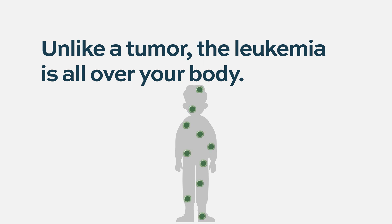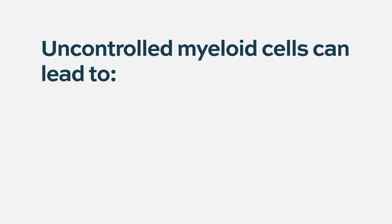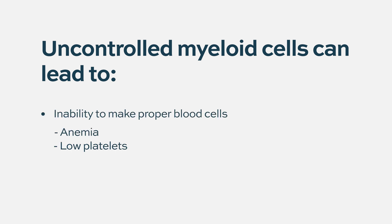These cells grow and grow and grow, and there are far too many of them, and it's completely uncontrolled. They can take over the body and lead to the inability of your body to make proper blood cells, so people get anemia, people get low platelets, and it can be a fatal condition.